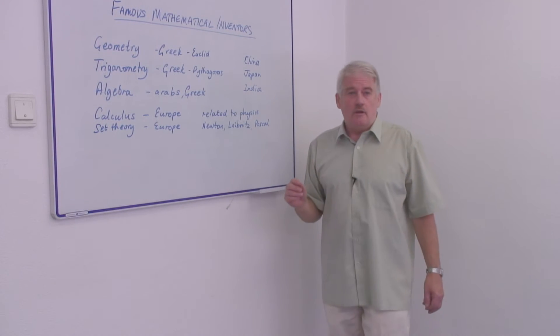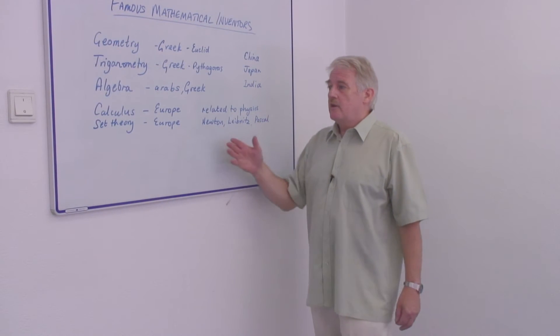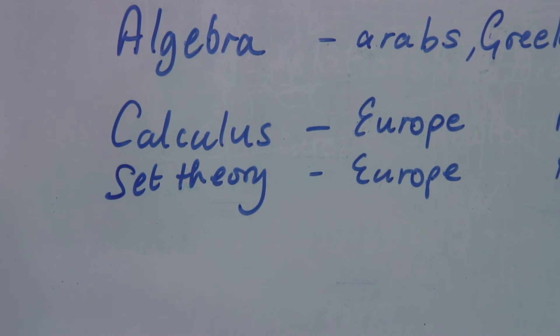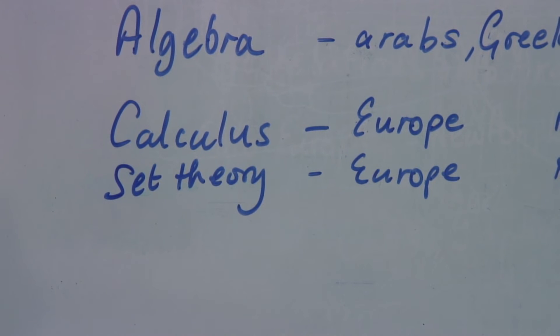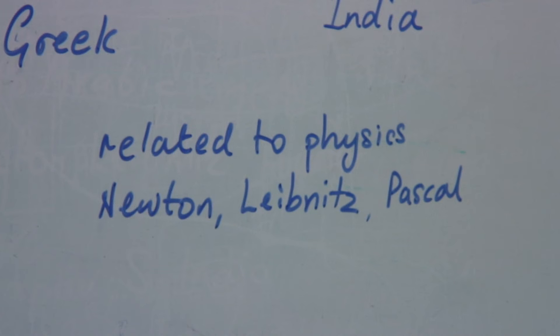Much later, as scientific problems got to be much more difficult, calculus and set theories were developed. These were mainly developed in Europe and we came across Newton and Leibniz and Pascal.